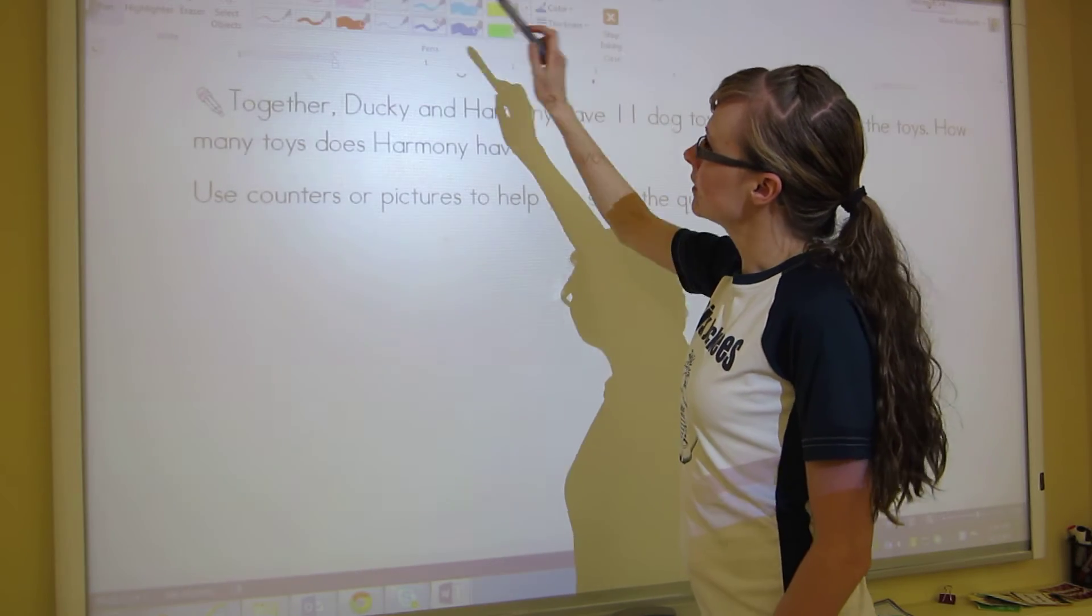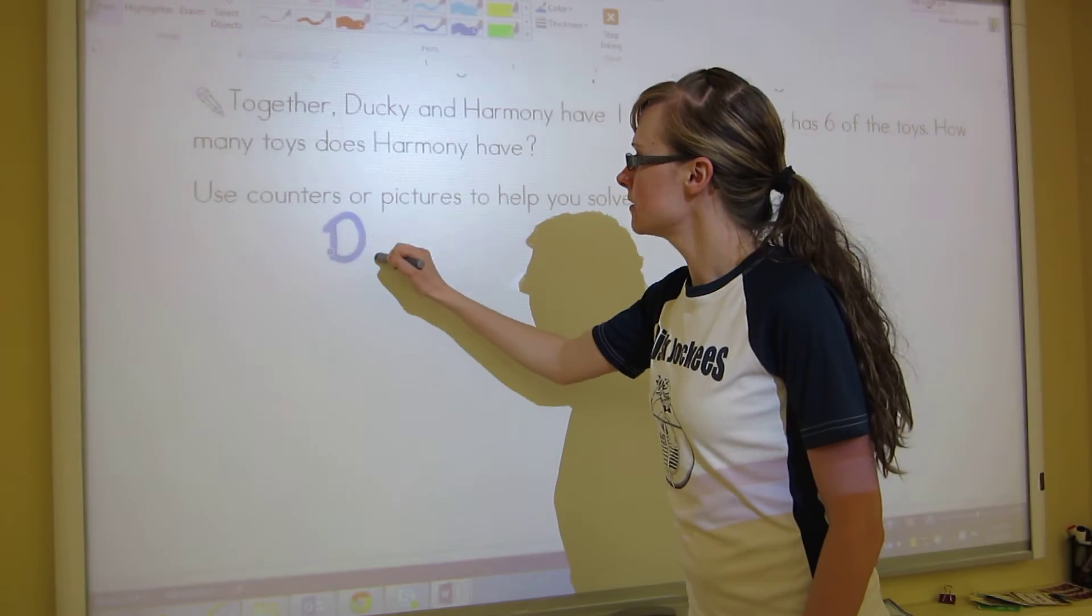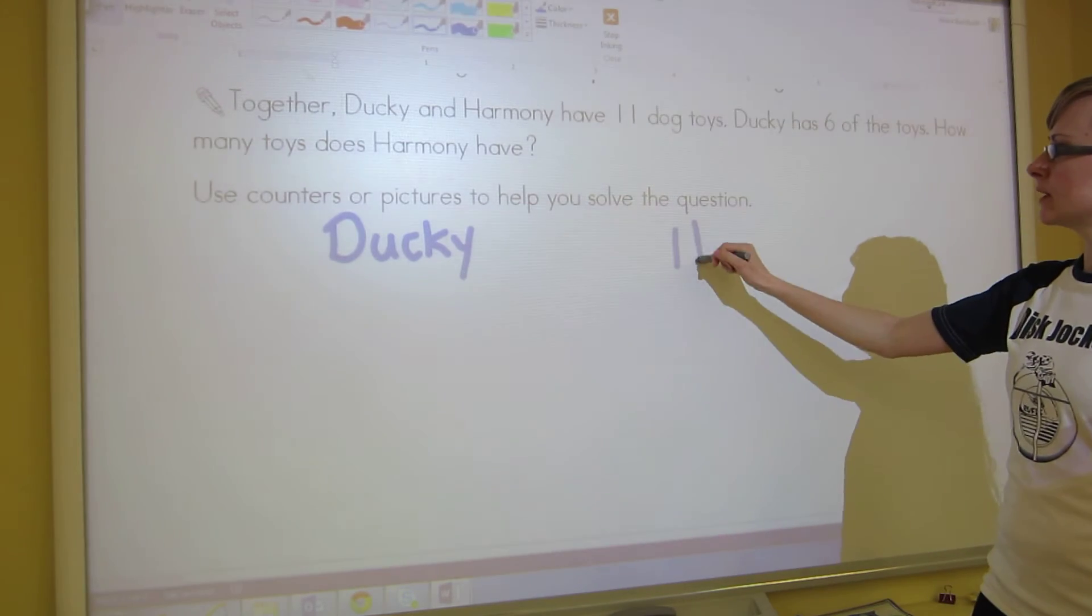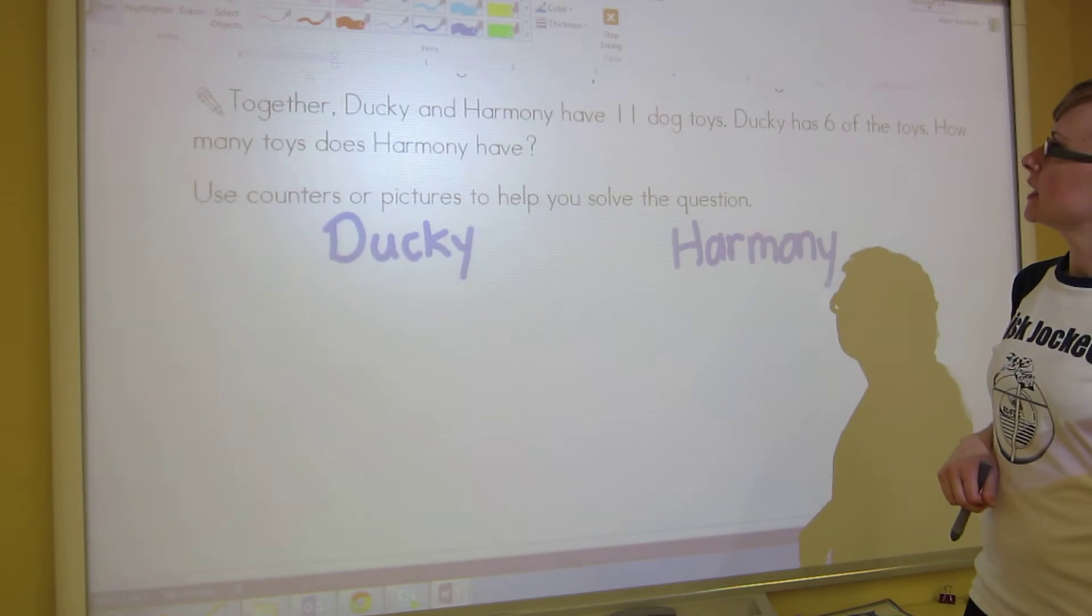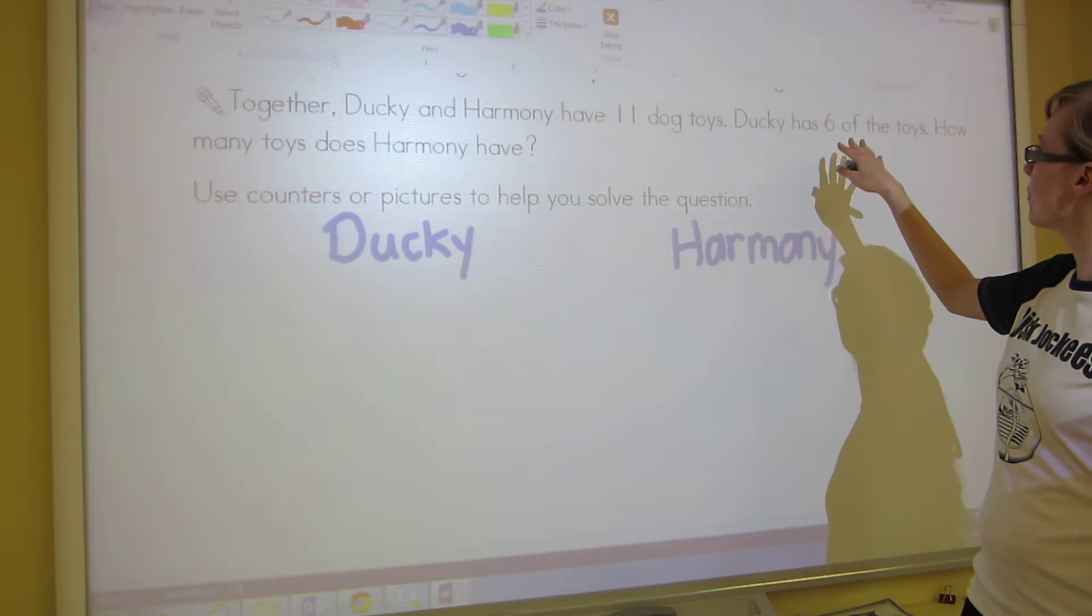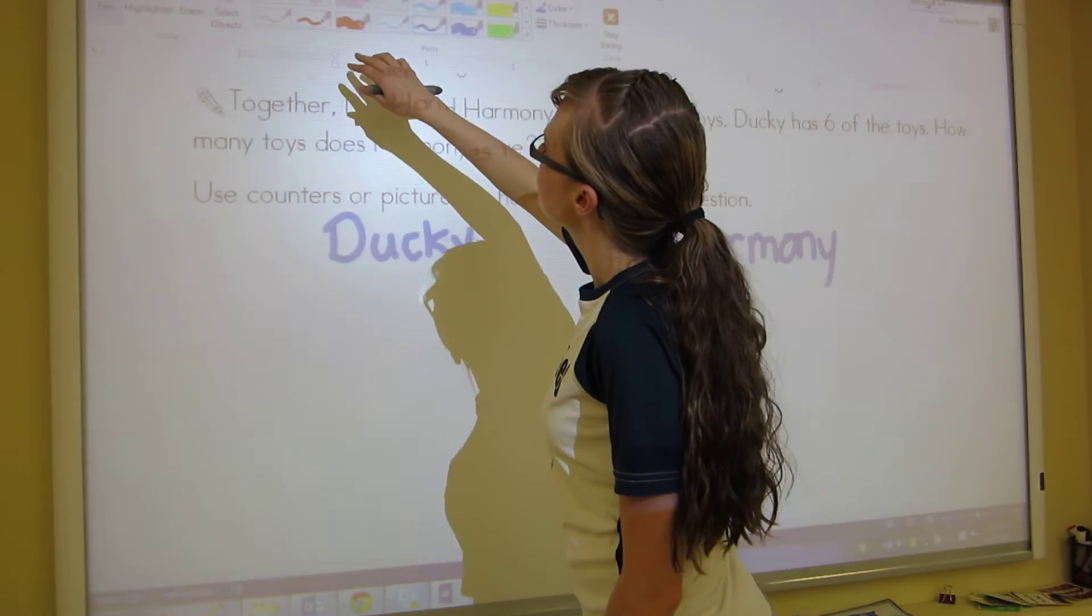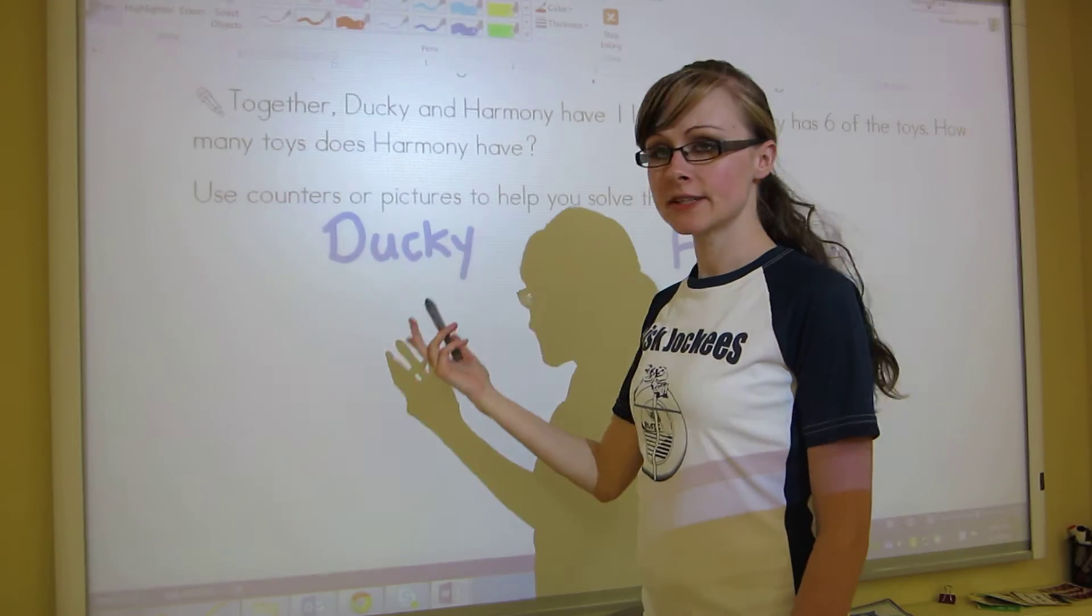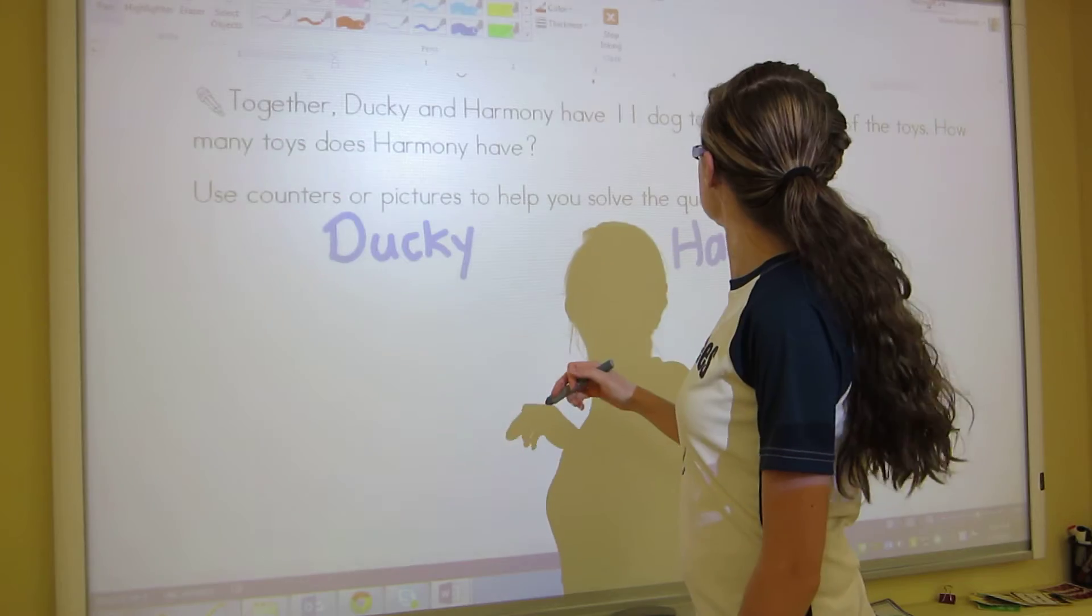This one says use counters or pictures to help you solve the question. So we'll put Ducky and then we will put Harmony. We have 6 toys for Ducky and we want to know how many Harmony has. All we need to do is draw 6 toys for Ducky and then count up until we get to 11 for Harmony.